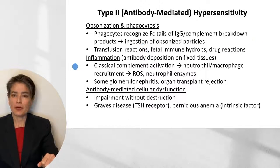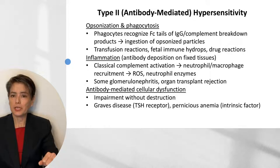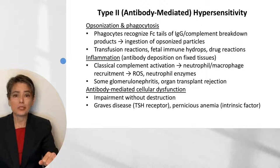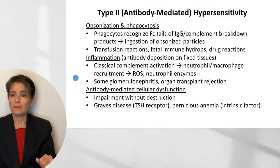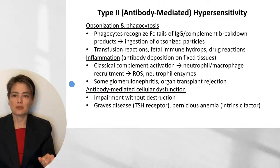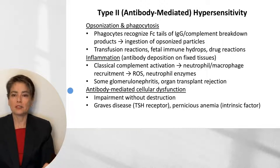A second way that antibodies can cause a hypersensitivity reaction is through creating inflammation. This is what we associate with antibody deposition on fixed tissues — the classic example being Goodpasture syndrome. Once those antibodies deposit in fixed tissues, we get activation of complement by the classical pathway, recruiting neutrophils and macrophages, resulting in the release of reactive oxygen species and neutrophil enzymes. We see this pathologic process in some types of glomerulonephritis as well as organ transplant rejection.